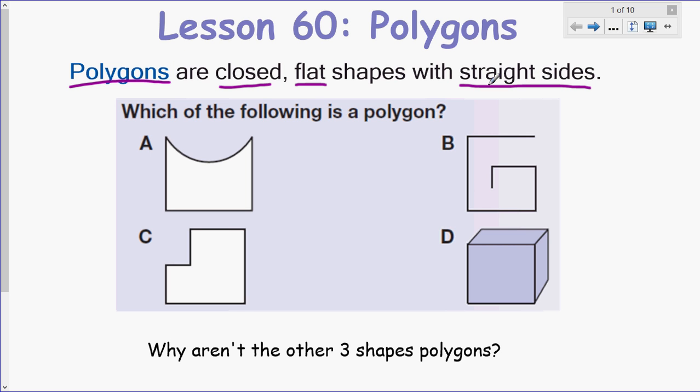Let's look at this picture here. Which of the following is a polygon to try to get us to hone in on that definition? So let's look at A, B, C, and D. I'd like you to look at the definition of polygon and circle the shape that you believe to be a polygon. Letter A does not meet the criteria because the one side here is not straight, so that is not a polygon. Letter B is not a polygon because it is not closed. See how there's an opening here. It's kind of like a maze.